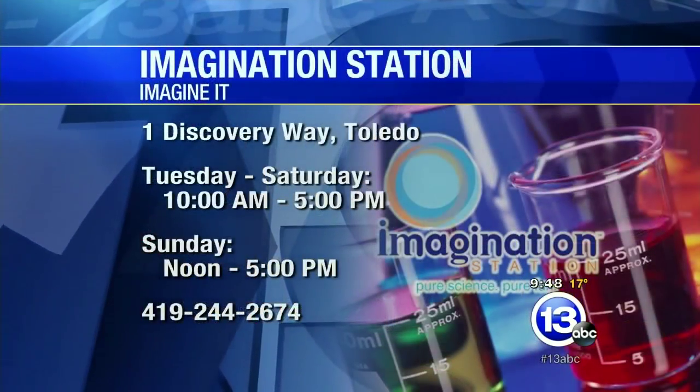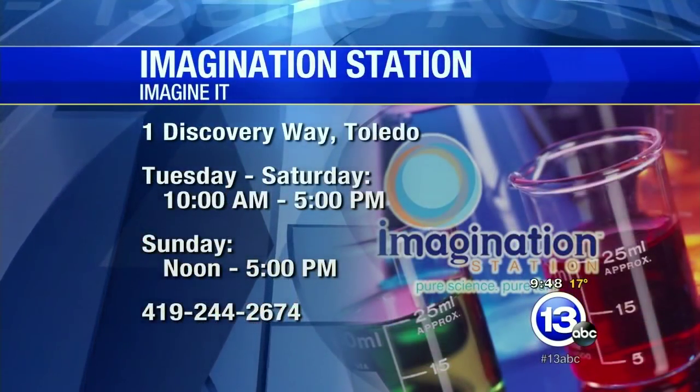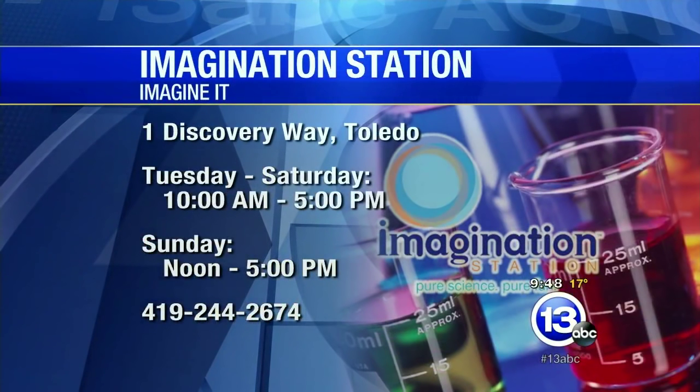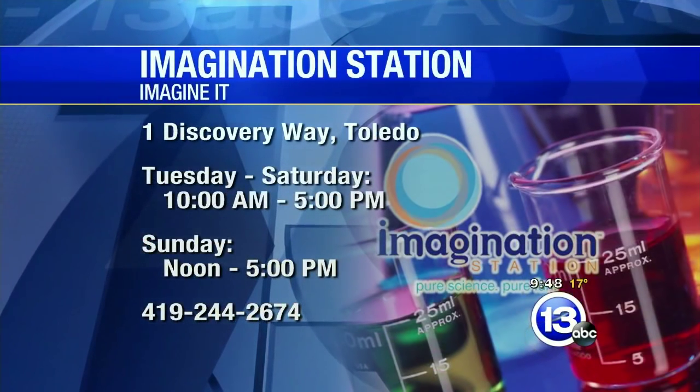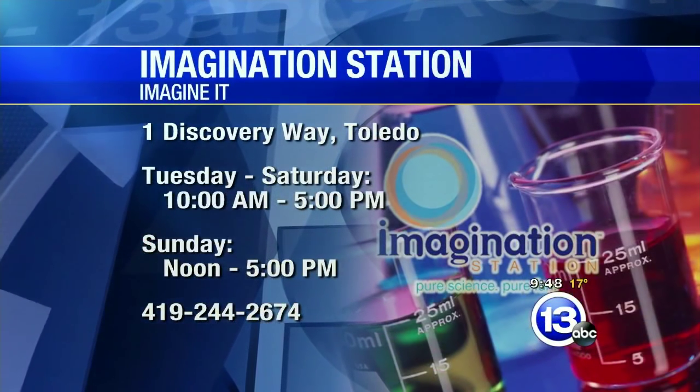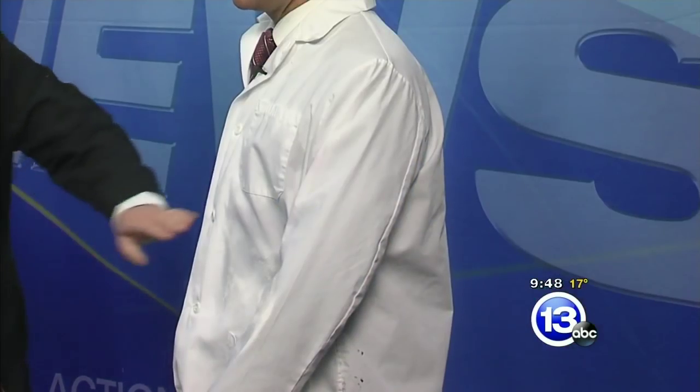We have all the information on our website about the red cabbage juice indicators and some other stuff you can do as well. If you want to see Carl blast you in person, you can do so at the Imagination Station — at One Discovery Way, open today from 10 until 5. That is this week's Imagine It. We're going to turn it over to Dave with sports.